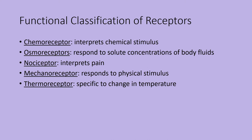Looking at the functional classification of receptors: chemoreceptors interpret a chemical stimulus; osmoreceptors respond to changing concentrations of solutes, such as detecting changes in sodium concentration; nociceptors interpret pain; mechanoreceptors respond to a physical stimulus like stretching; and thermoreceptors respond to a change in temperature.